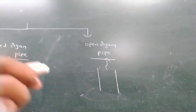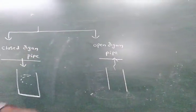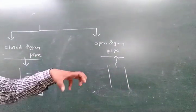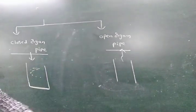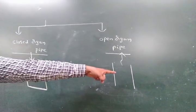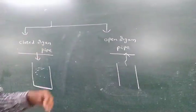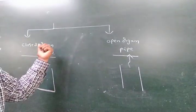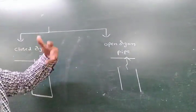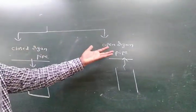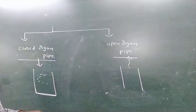One end closed — that is the closed organ pipe. Both ends open — that is the open organ pipe. In the next video I will discuss the closed organ pipe, and in the following video I will discuss the open organ pipe.